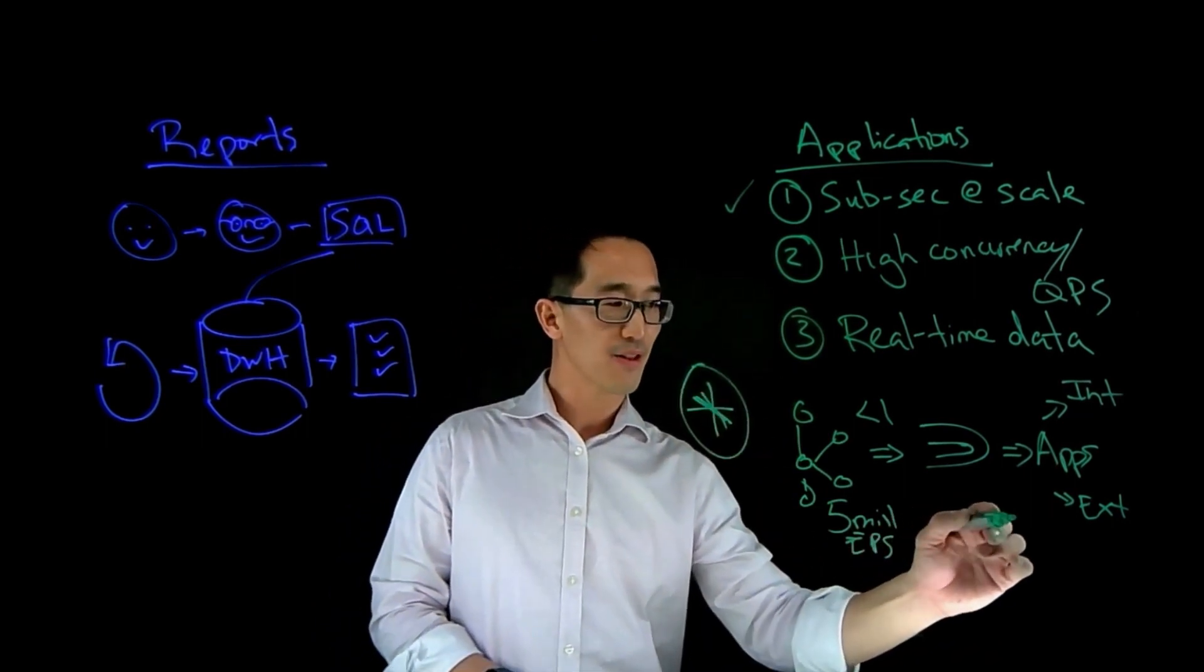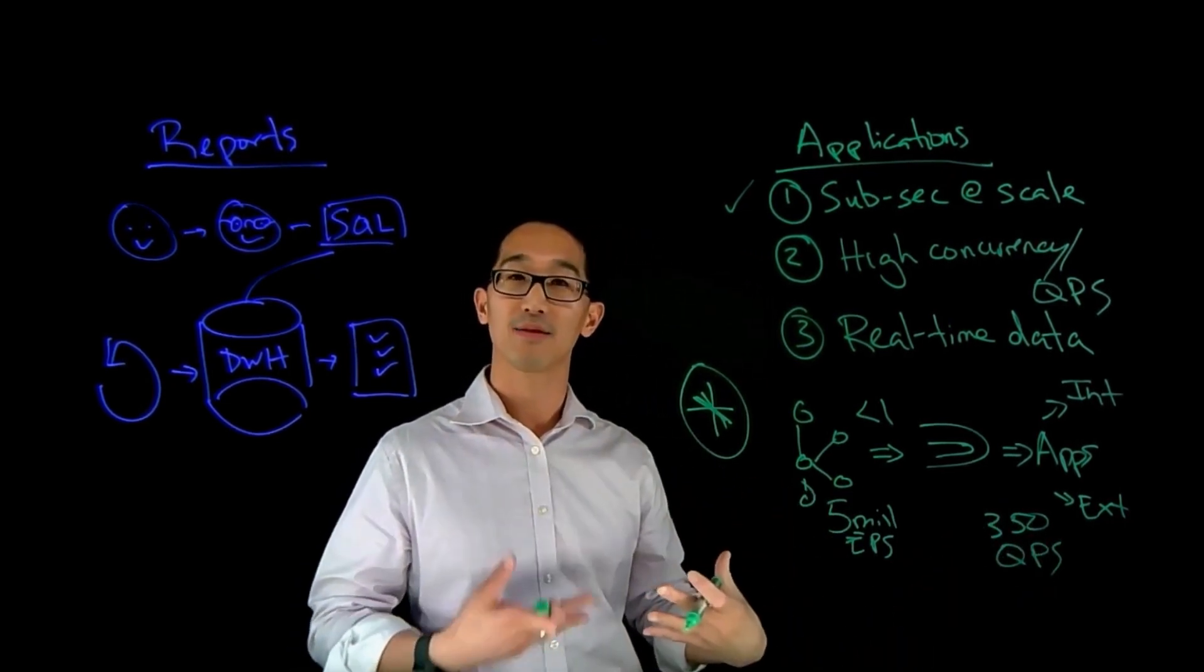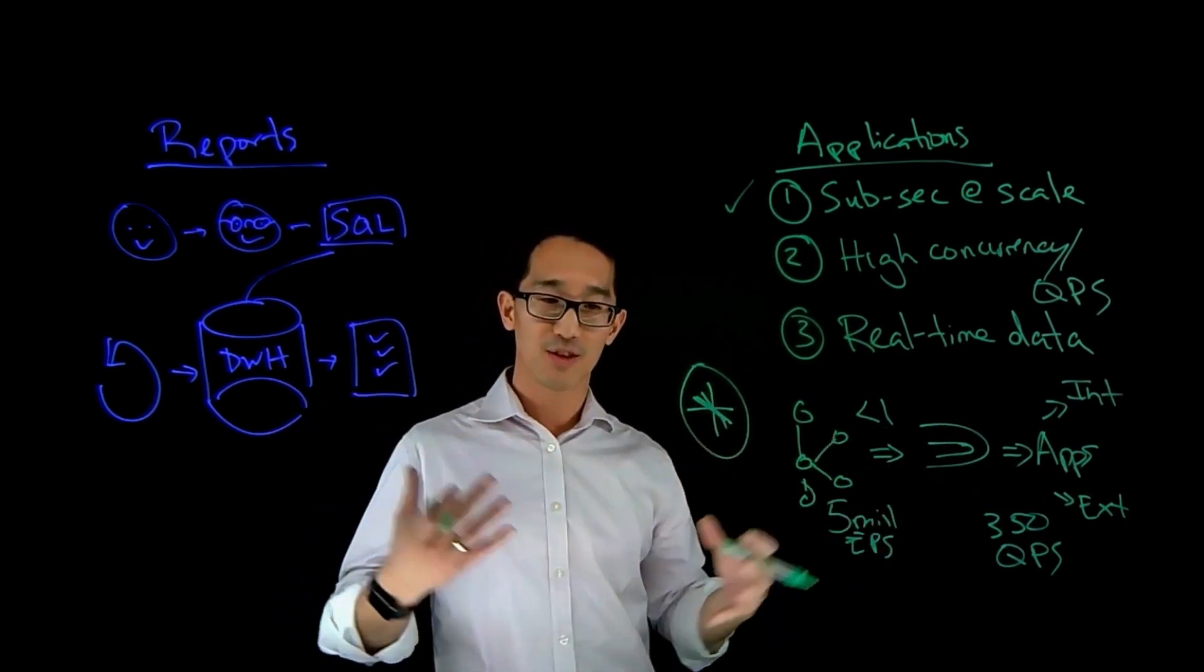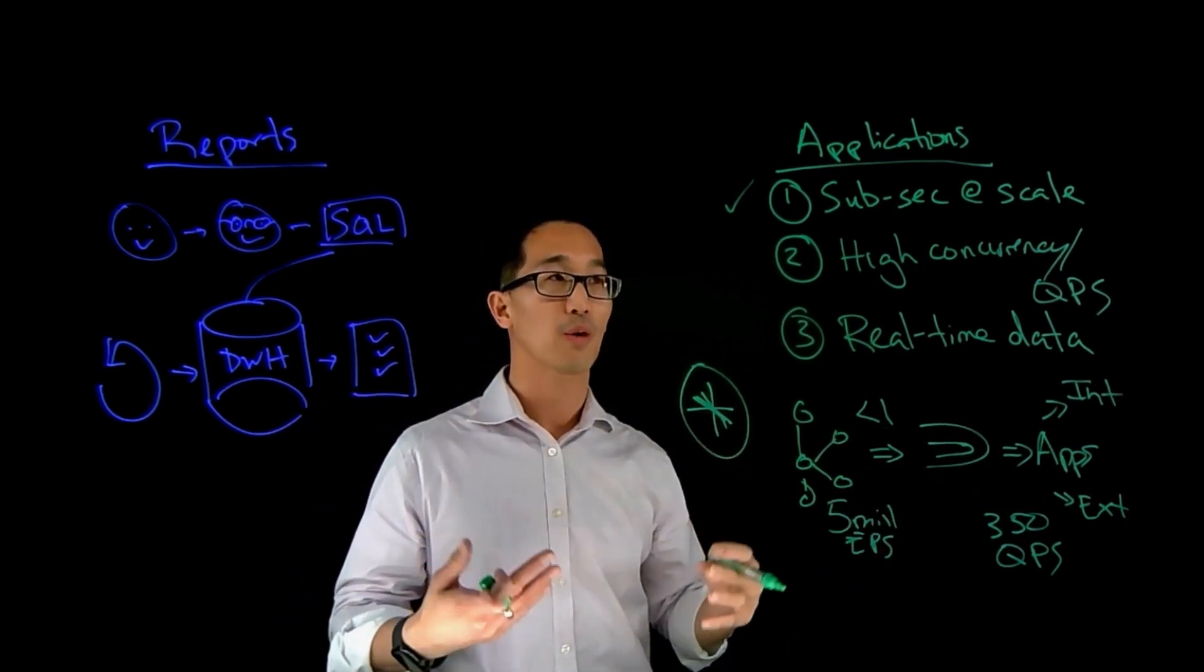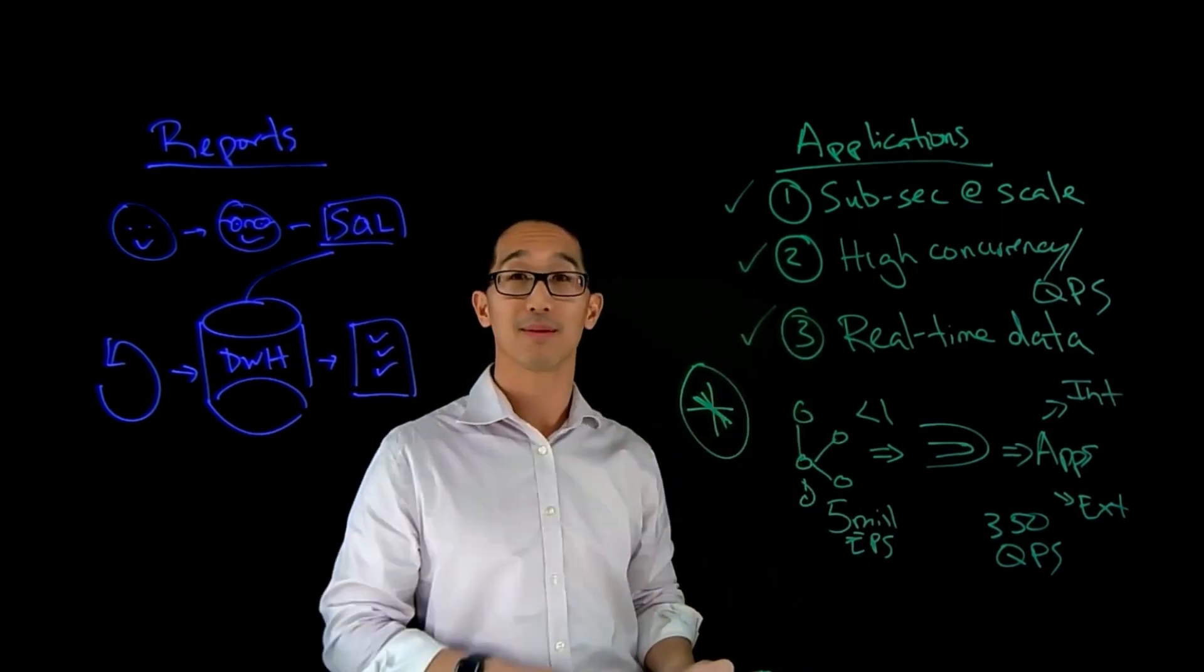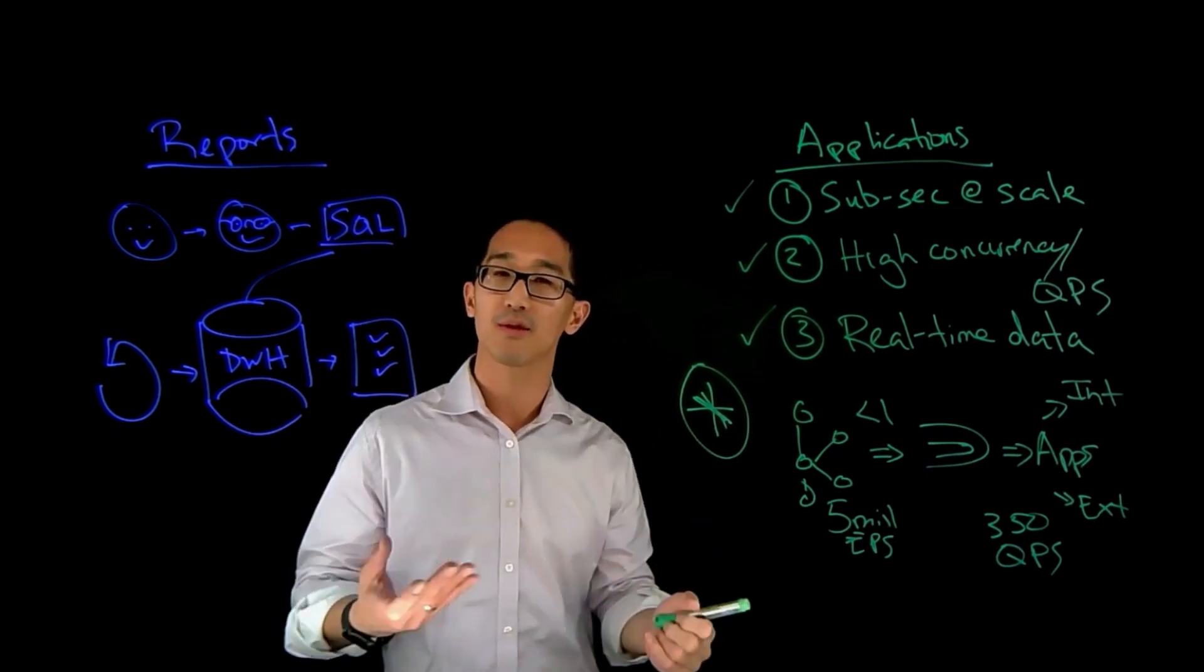Do they have a need for high concurrency? Absolutely. They're dealing with 350 queries per second driven because of the interactive dashboarding that they're creating for their customers. And that is really driving a lot of concurrency and queries per second. And then are they having a requirement for real-time data? Absolutely.